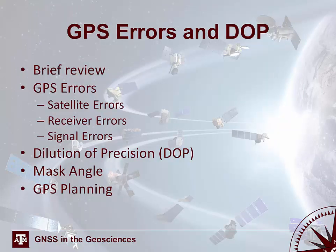In summary, this lecture covered a brief review of Keplerian orbits and satellite errors, several types of GPS errors including satellite errors, receiver errors, and signal errors, as well as dilution of precision. You need to know the different error types, what PDOP is, what the other DOP measures are, what mask angle is, and how DOP and mask angle are related but different. The Trimble GPS planning tool accounts for dilution of precision but not for local errors such as mask angle.